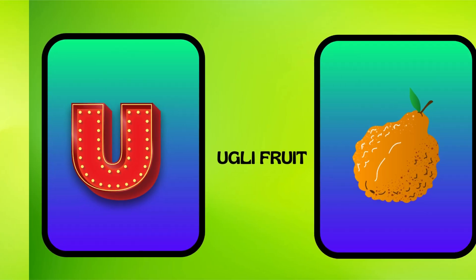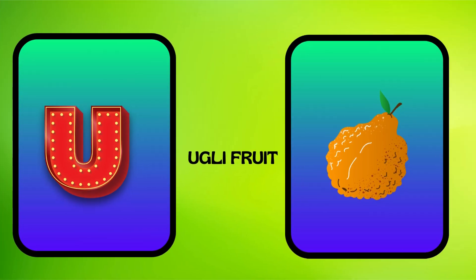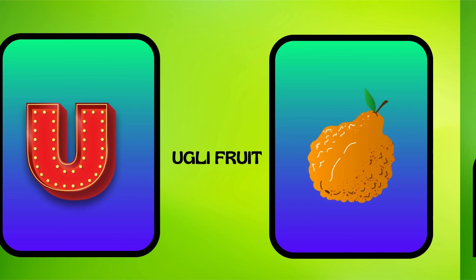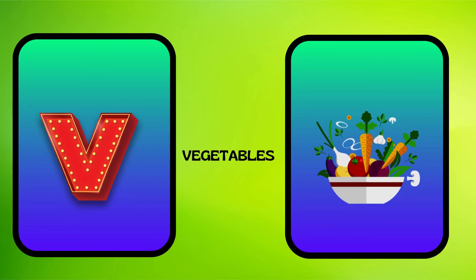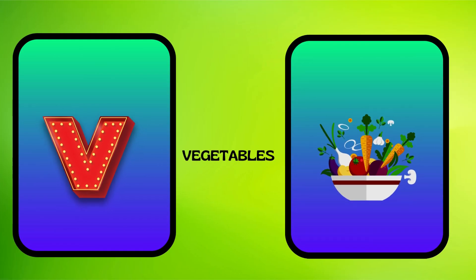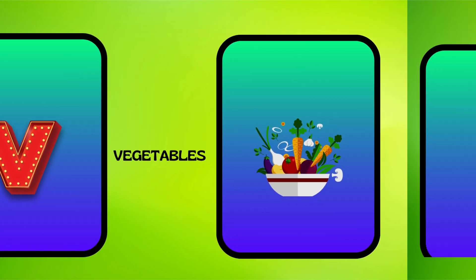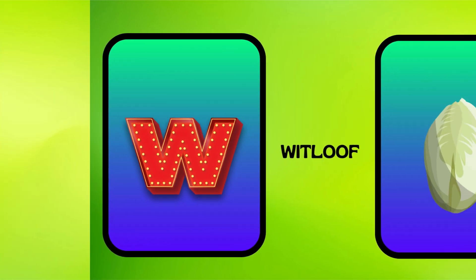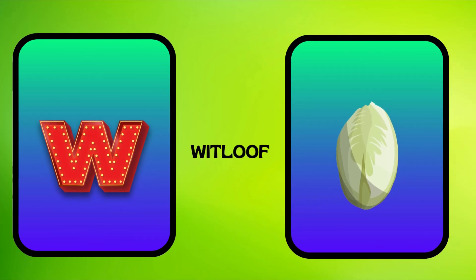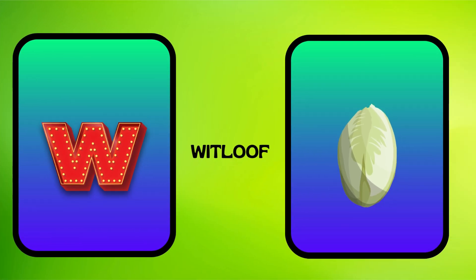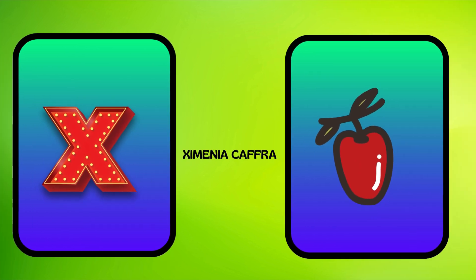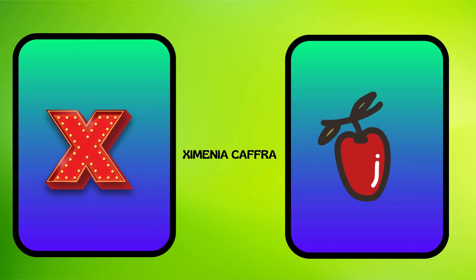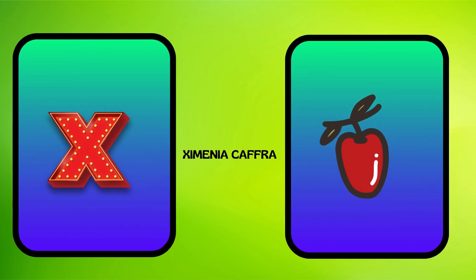U is for ugly fruit, uh, ugly fruit. V is for vegetables, vh, vegetables. W is for whitloaf, wuh, whitloaf. X is for zymenia caff, zh, zymenia caff.